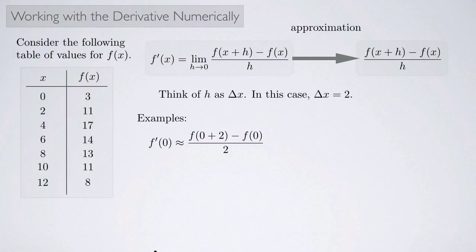Let's look at some examples. Let's find the derivative at 0. We're going to use our approximation here. In this case, 0 is playing the role of x and 2 is our Δx. I can read this right off the table: f(0+2) is the same thing as f(2), and f(2) is 11, and f(0) is 3. So I get 11 minus 3 over 2, which is 8 over 2, which is 4.